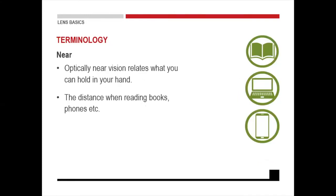If we look at near vision, optical near vision relates to what you're holding in your hand — usually an arm's length or more or less. Something like reading, working on your laptop, working on your cell phone, anything that is close — the distance when you're reading a book.